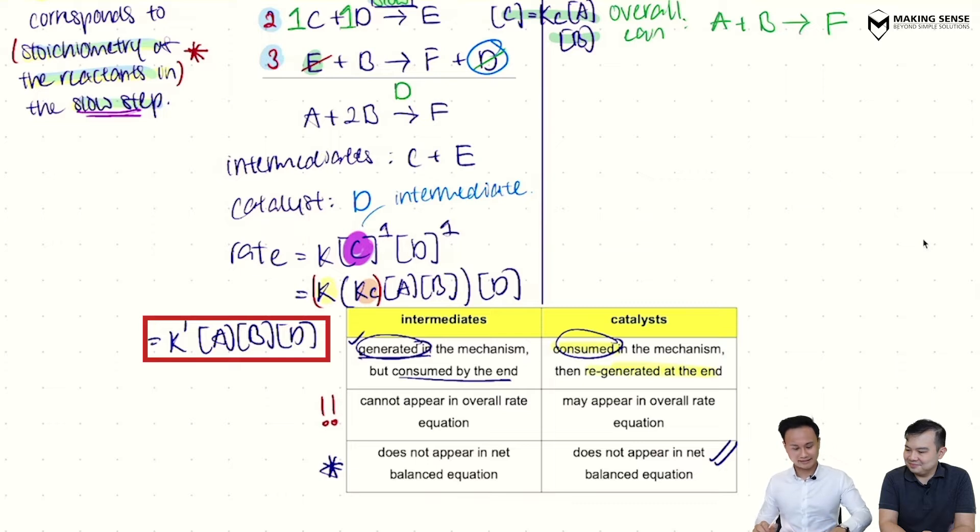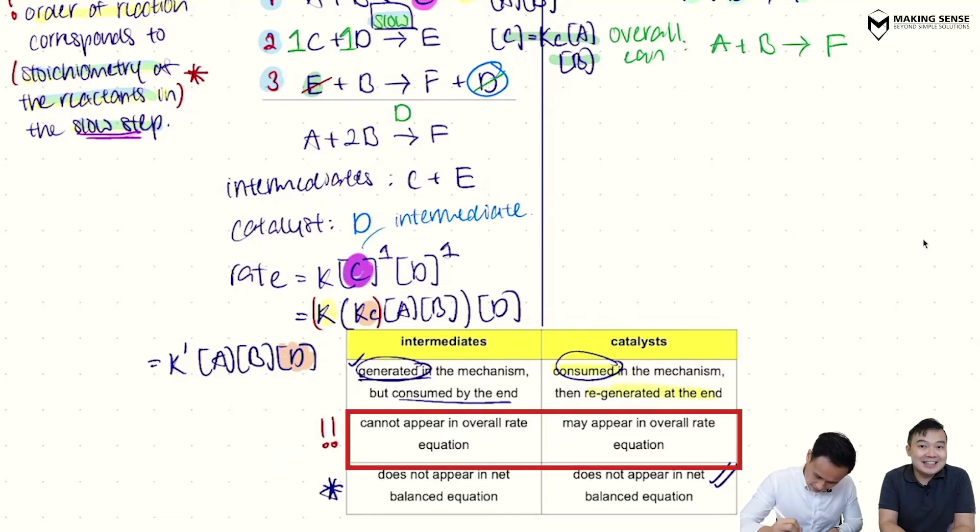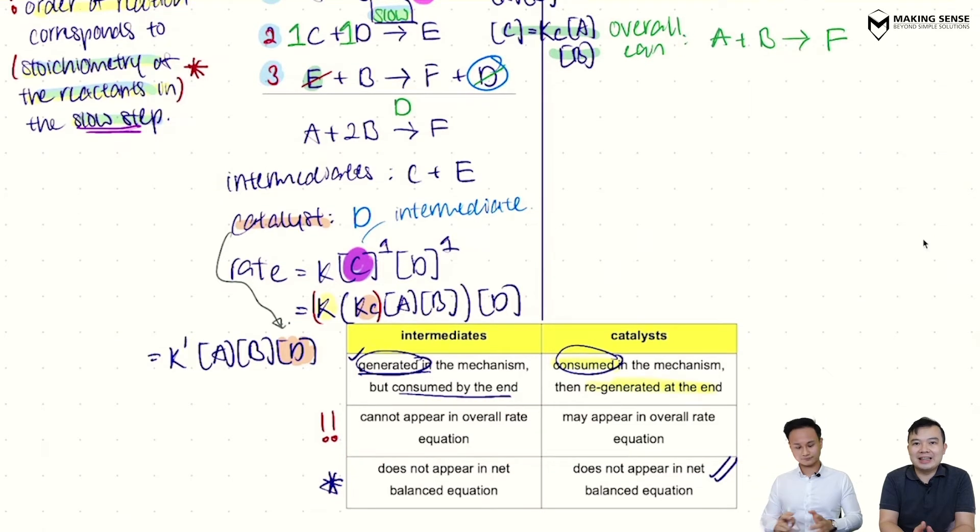And if I do that for you, you'll end up with K prime multiplied by A, B, and D. Now, Mr. Leong, so what you said was right. Intermediates cannot be in your rate equation, but can the catalyst be in your rate equation? Yes. So you take a look, just now we established that D is my catalyst, and it turns out the overall rate equation, there is also a D as well. Which makes sense, right? Because I can increase my rate of reaction by adding in more catalysts.